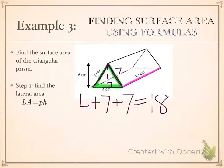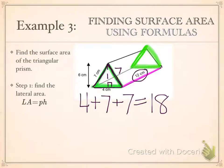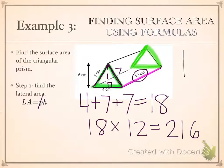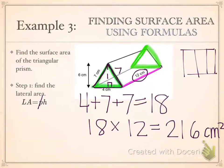Now we multiply the perimeter times the height of our prism — the distance from base to base. The prism is laying on its side, and the length we're looking for is 12 centimeters. So we take the perimeter, which was 18, and multiply it times the height of the prism, which is 12. 18 times 12 equals 216 square centimeters. So step one is complete: our lateral area is 216 square centimeters.